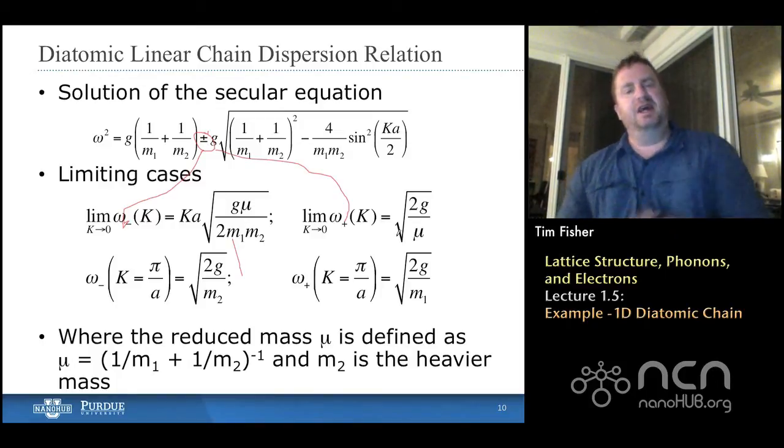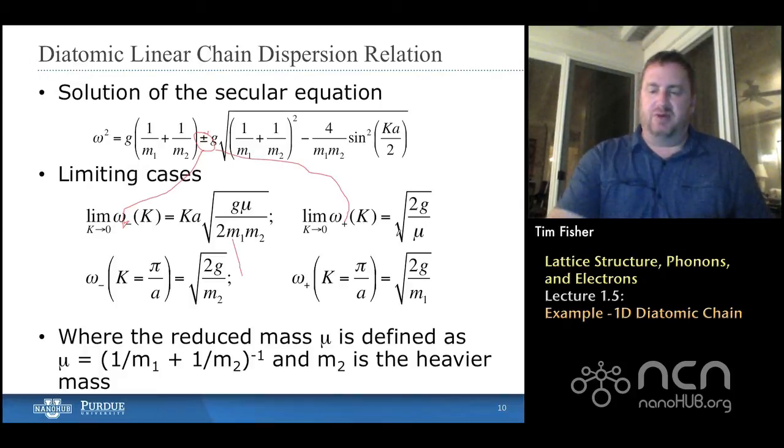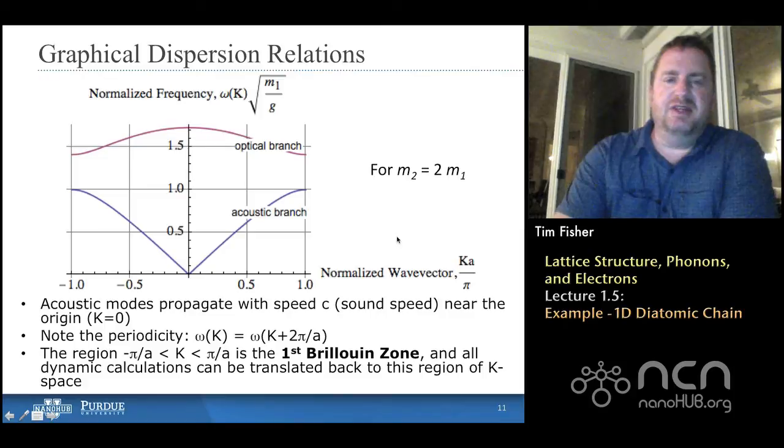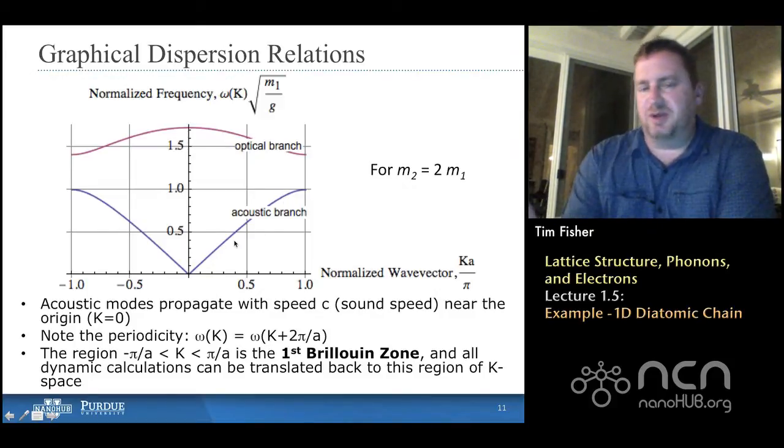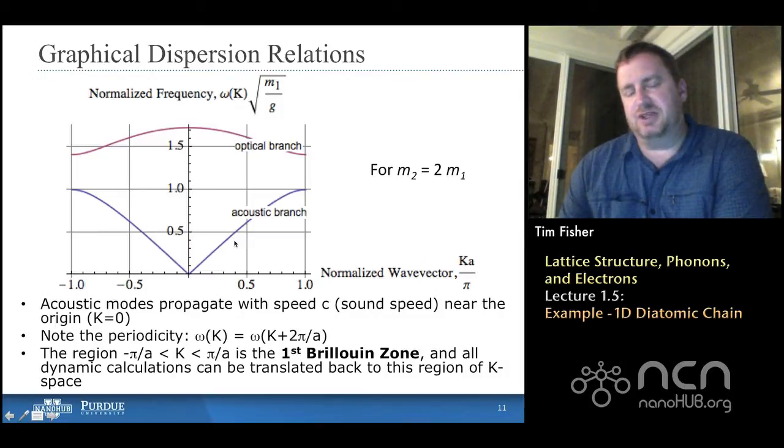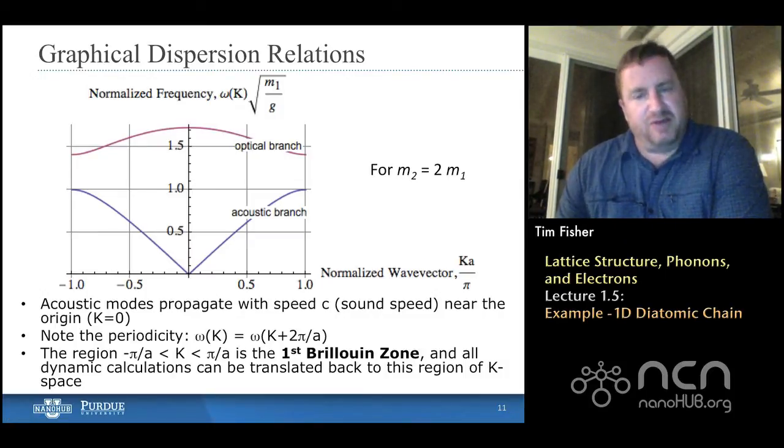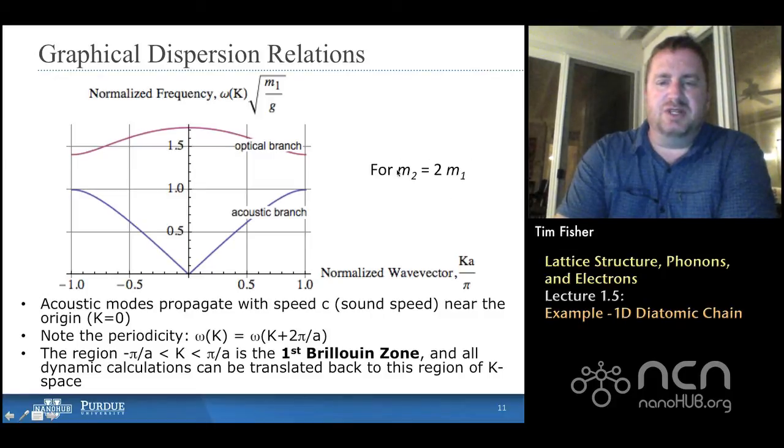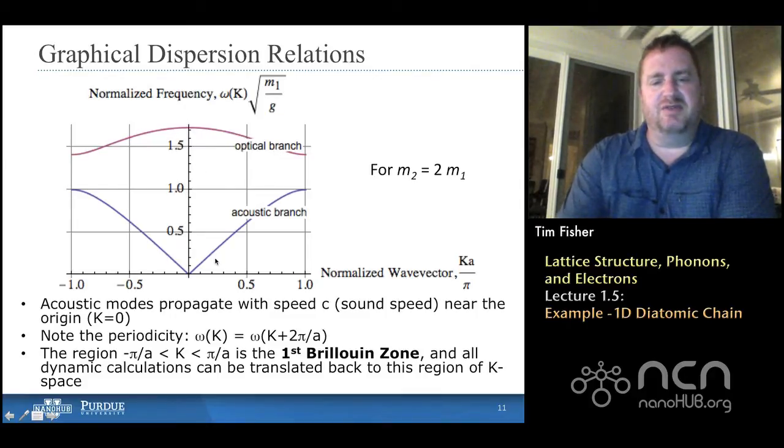But, I will note that, in essence, these two branches, one of them is very much like what we had before, and the other one is new. If we plot these out, we see that the bottom branch, this is the omega minus branch that I'm scrolling over right now, that's the acoustic branch, once again. It looks very similar to what we had before for the monatomic chain. It's a quarter sine wave, or very close to a quarter sine wave. In this case, we've chosen the m2 to be two times m1. So, we've, that's given us some detailed quantitative information here. If we change those masses, the curves would change a bit.